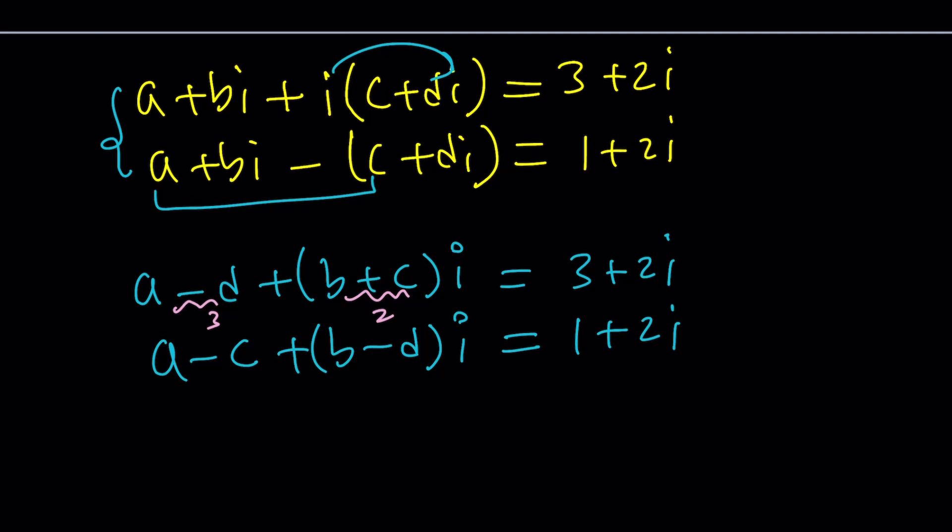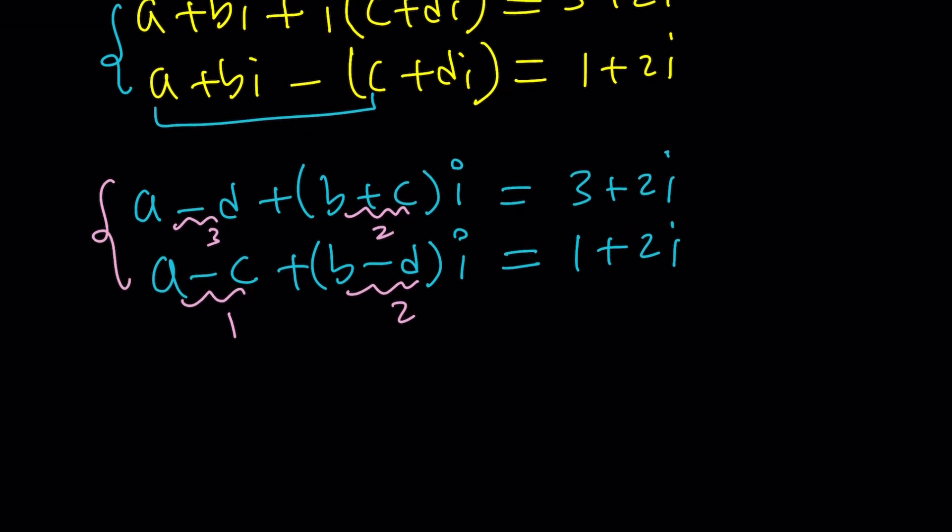Okay. So, now a minus c is 1 here and b minus d is 2. Cool. Now, this gives us another system. Let's go ahead and write it down. But this time, we're going to get four equations because of four variables.